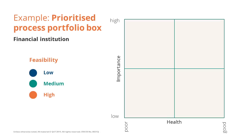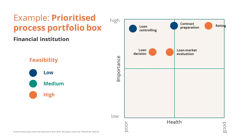This is the prioritised process portfolio for a financial institution. There are processes for loan controlling, contract preparation, rating, handling of payments, and so on. We have placed them in the peak chart and can identify processes to be managed on the basis of their position in the chart.